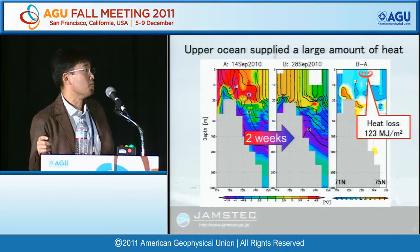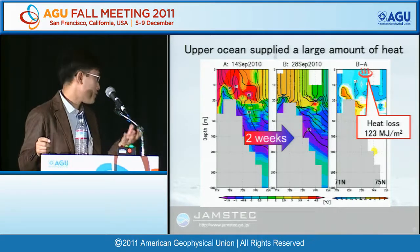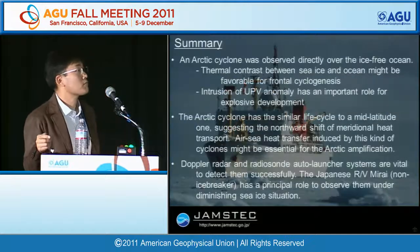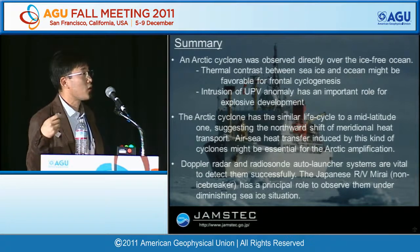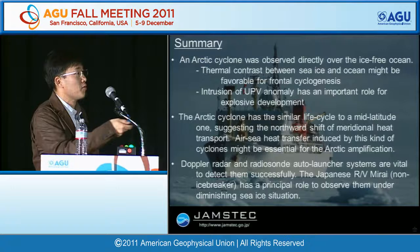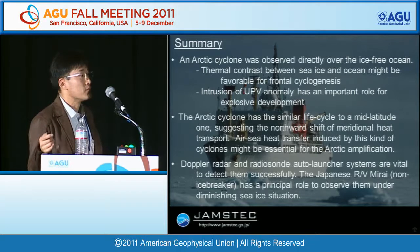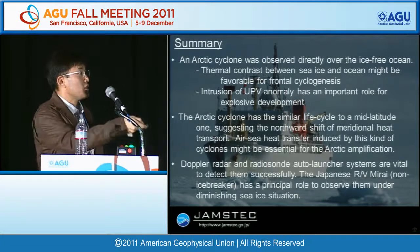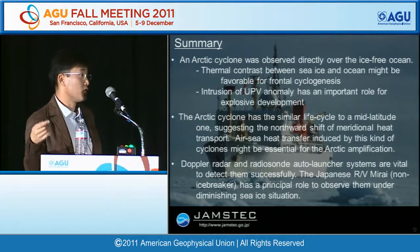Satellite AMSR-E data shows that after cyclogenesis, sea ice advanced and sea ice recovery proceeded, while sea surface temperature decreased about 2 Kelvin. The special oceanic section before and after cyclogenesis shows about 1.5 Kelvin decrease in water temperature to 20 meter depth. The heat released to the atmosphere was 123 megajoules per meter squared. If this kind of event frequently occurs, Arctic amplification during late fall and winter will proceed. The Arctic cyclone was observed directly over ice-free ocean; thermal contrast is very important for the initial stage, and upper PV intrusion drives explosive development. This suggests a northward shift of meridional heat transport and that air-sea heat transfer induced by these cyclones might be essential for Arctic amplification.